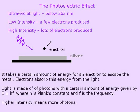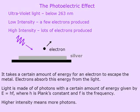Einstein won the Nobel Prize in physics for his explanation of the photoelectric effect. He made the following points: it takes a certain amount of energy for an electron to escape the metal, and the electrons absorb this energy from the light. As an analogy, to escape Earth's gravitational field you need a rocket with enough energy to reach escape velocity — the same is true for electrons in metal. There are bonds between the electrons and the positively charged nuclei of the silver atoms, so you need a certain amount of energy to pull the electron free.